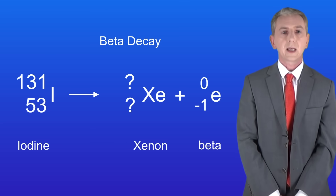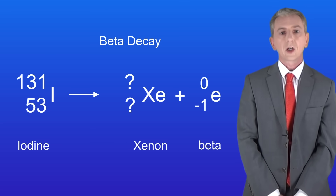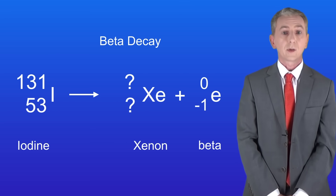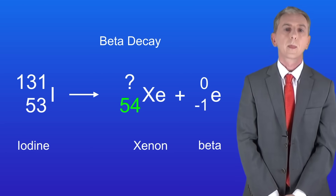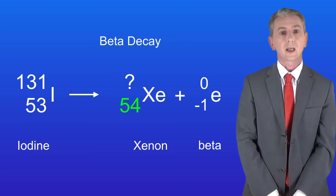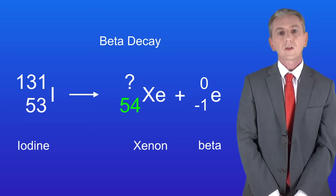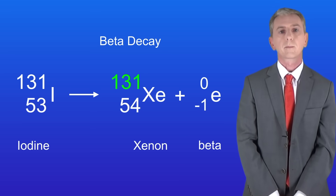In beta decay the atomic number increases by 1, so the atomic number of xenon must be 54. In beta decay the mass number does not change, so in this case the xenon isotope must have a mass number of 131.